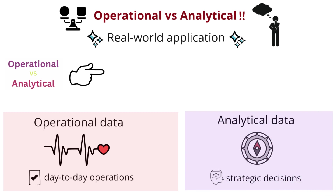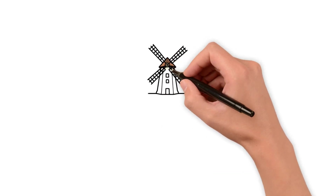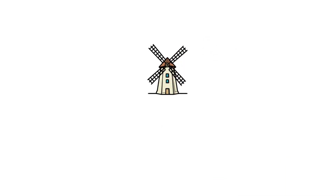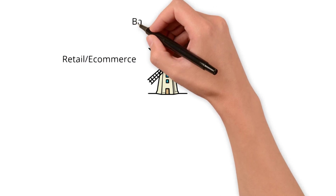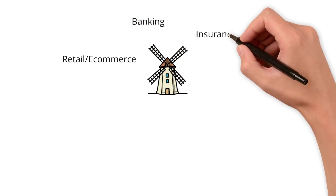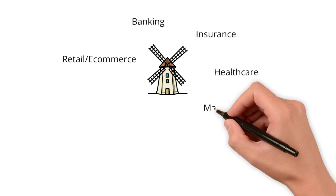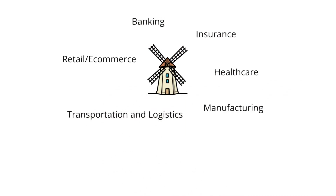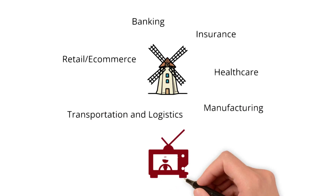Let's look at what industries we'll cover as we dive into different use cases: retail and e-commerce, banking, insurance, healthcare, manufacturing, and transportation and logistics. Now let's get into the scenarios.